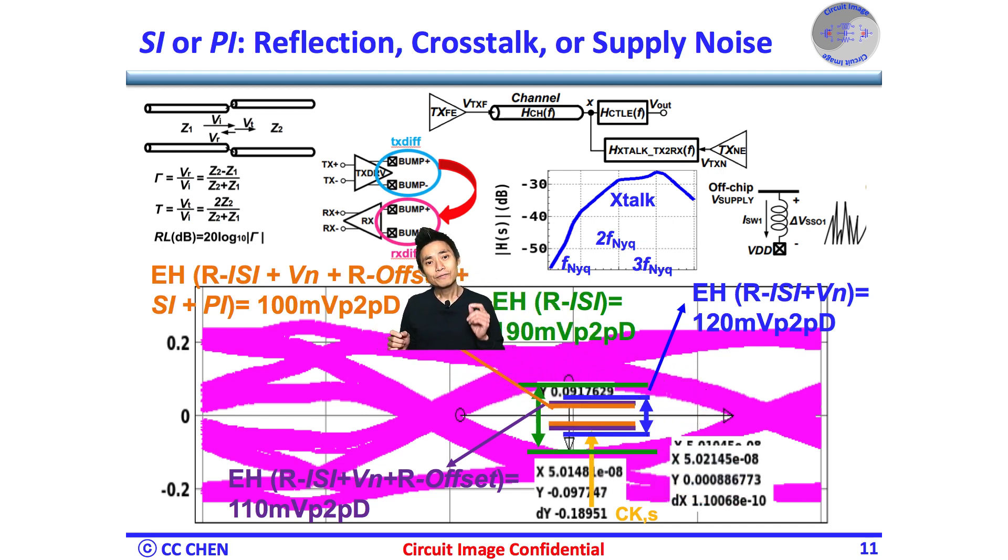Therefore, the final residual eye height would be 100 mV peak-to-peak differential. Would that be all? If not, think about the final decision-maker images for 5 seconds.